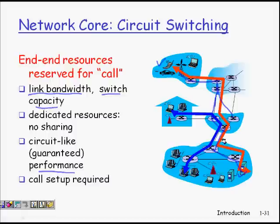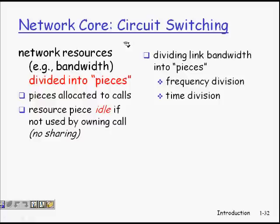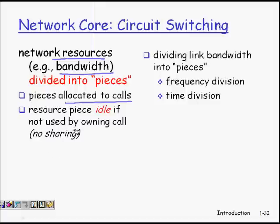Circuit switching guarantees performance. To set up the connection, you need to reserve the resource and path, then there is data transfer, and finally the path is torn down so resources are released. Call setup is required. A fixed piece of the link bandwidth is allocated to a particular circuit, like a telephone call. If the resource is idle, there is no sharing, which is not ideal.